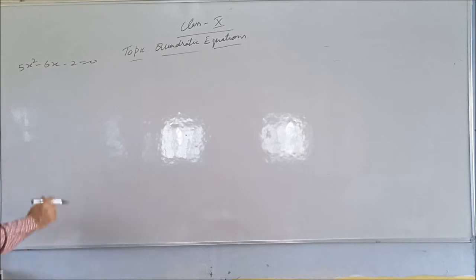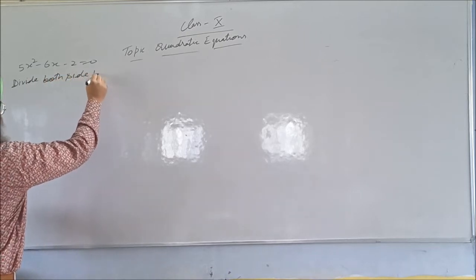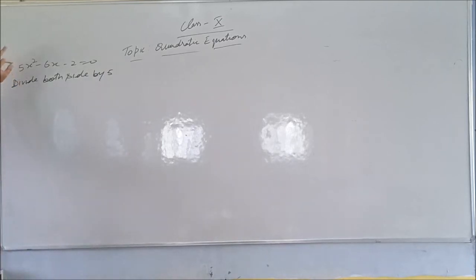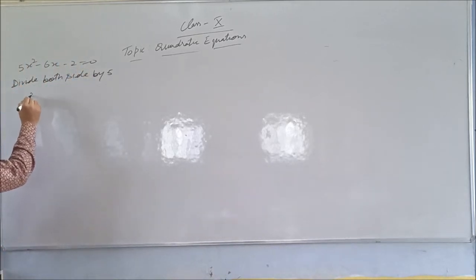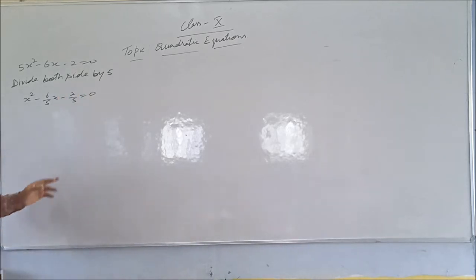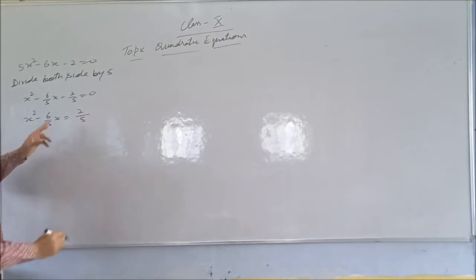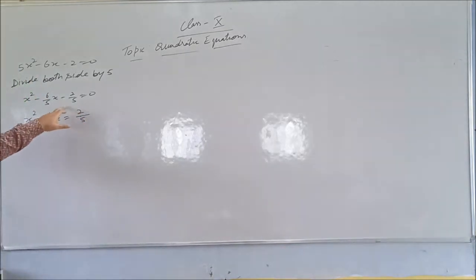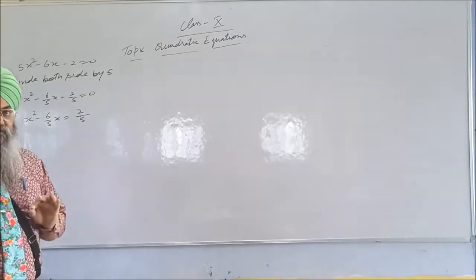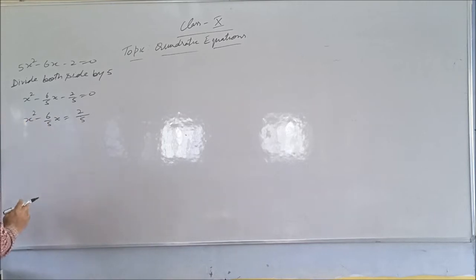I will repeat it again. Whatever the coefficient of x squared is, you divide the whole term by that number. Now, second point: shift the constant term to the right hand side. Third point: whatever the coefficient of x is now — the coefficient of x is 6 over 5 — make it half and square it.